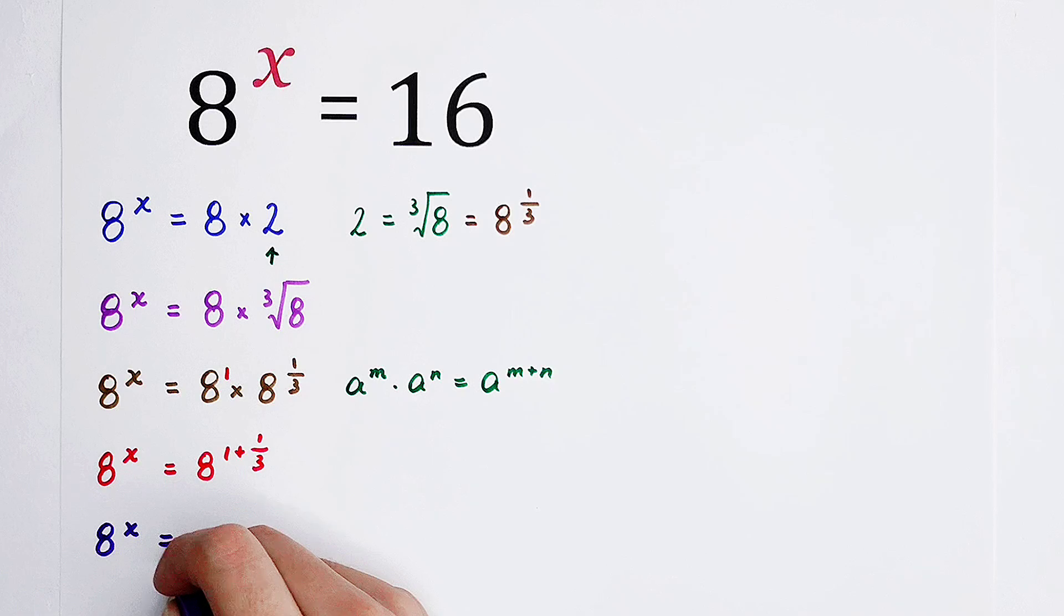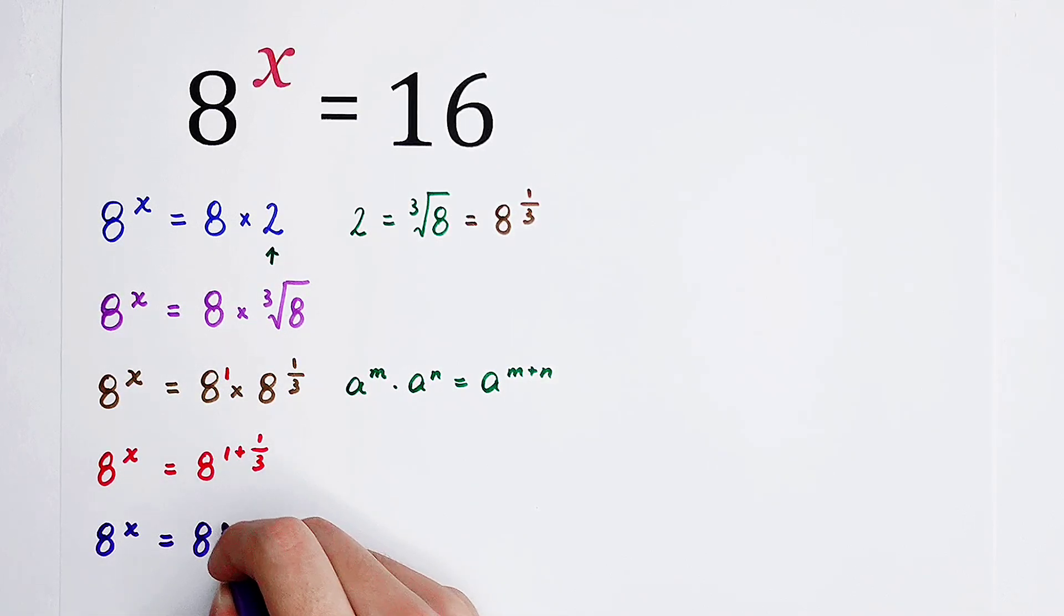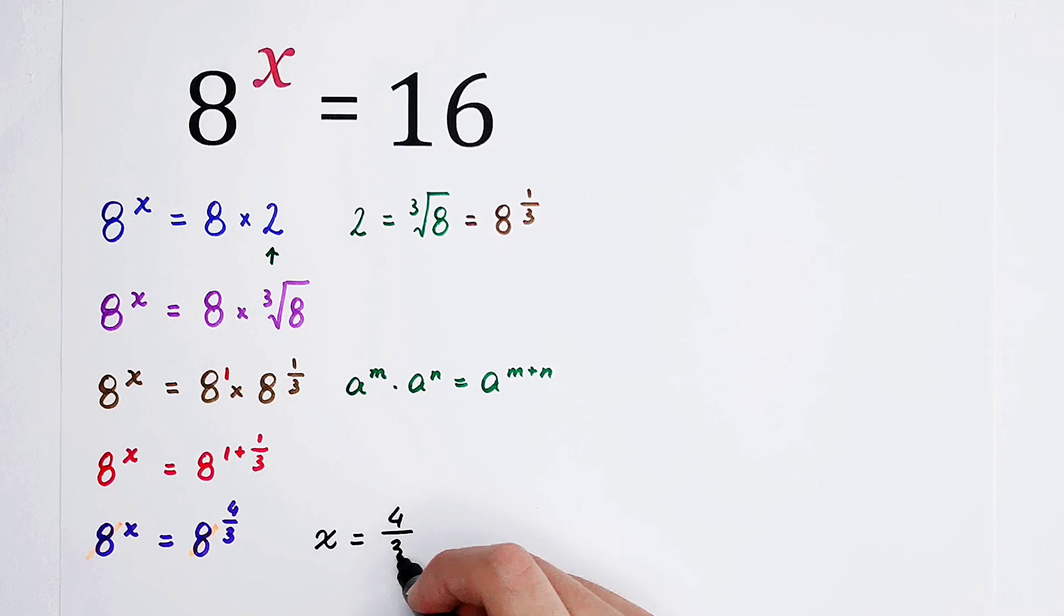And 1 plus 1 over 3 is, of course, 4 over 3. The bases can be cancelled out, and you can get the value of x. It is 4 over 3, 4 thirds. And stop! This was only the first method.